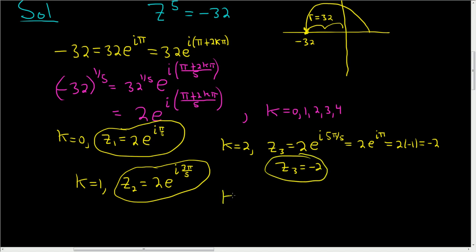When k is 3, we get z4 equals 2 e to the i. Plugging in 3: 2 times 3 pi is 6 pi, plus pi is 7 pi. So we get 7 pi over 5.